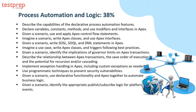Continuing Domain 3: write Apex classes and triggers following best practices; given a scenario, identify the implications of governor limits on Apex transactions; describe the relationship between Apex transactions, the save order of execution, and the potential for recursion and cascading; implement exception handling in Apex including custom exceptions as needed; use programmatic techniques to prevent security vulnerabilities; given a scenario, use declarative functionality and Apex together to automate business logic; and given a scenario, identify the appropriate publish or subscribe logic for platform events.